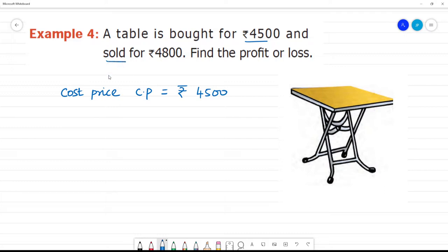Next, sold for. Sold for is another term, selling price. Selling price, SP is equal to Rs. 4,800.